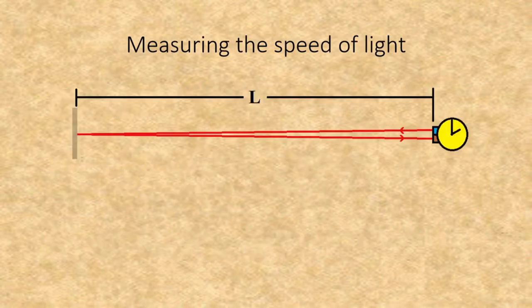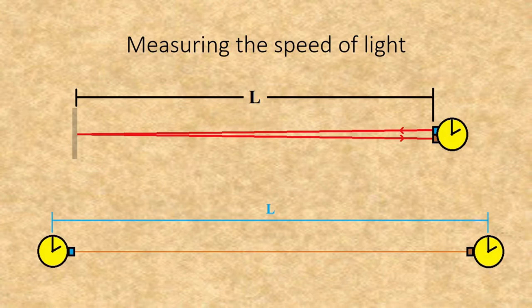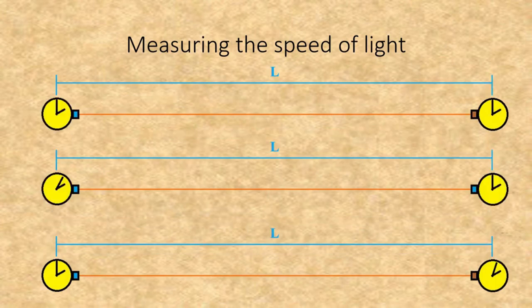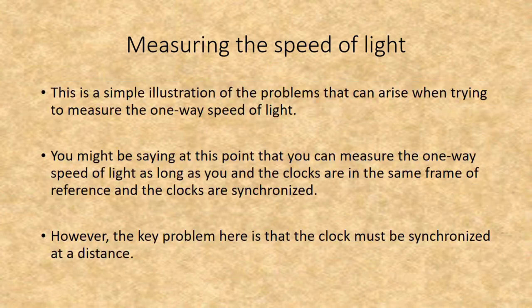The simplest way of measuring the speed of light is sending a pulse of light to a mirror and bouncing it back, so that you have the time it was sent and received based on the same clock. To measure the one-way speed of light, you need to send a pulse from one clock to another with the two clocks synchronized. The problem is that if these clocks are not synchronized perfectly, you will get erroneous figures.